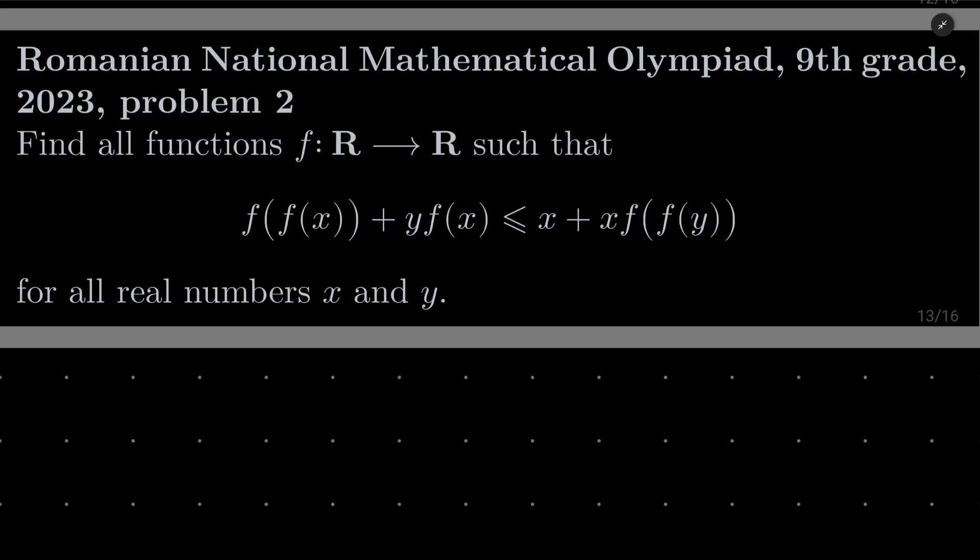Hello friends. In this video I'd like to solve the following problem from the Romanian National Mathematical Olympiad for 9th graders, 2023, problem number 2. We wish to find all functions f from the set of real numbers into itself such that f(f(x)) + y·f(x) ≤ x + x·f(f(y)) for all real numbers x and y. So this time it's a functional inequality.